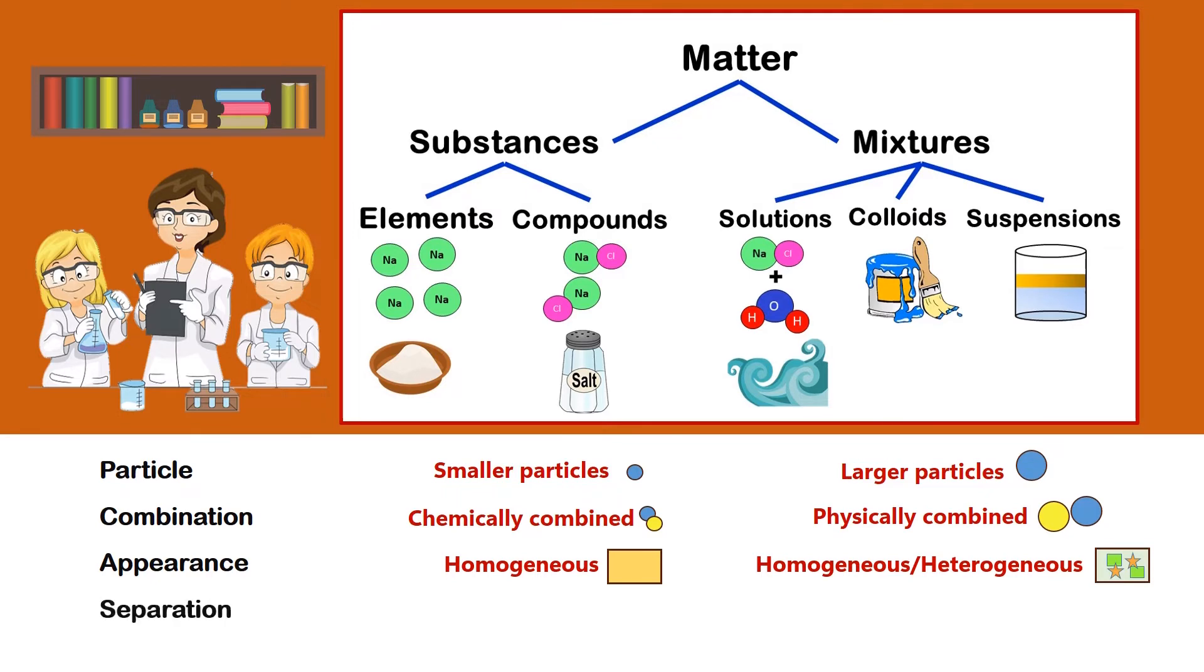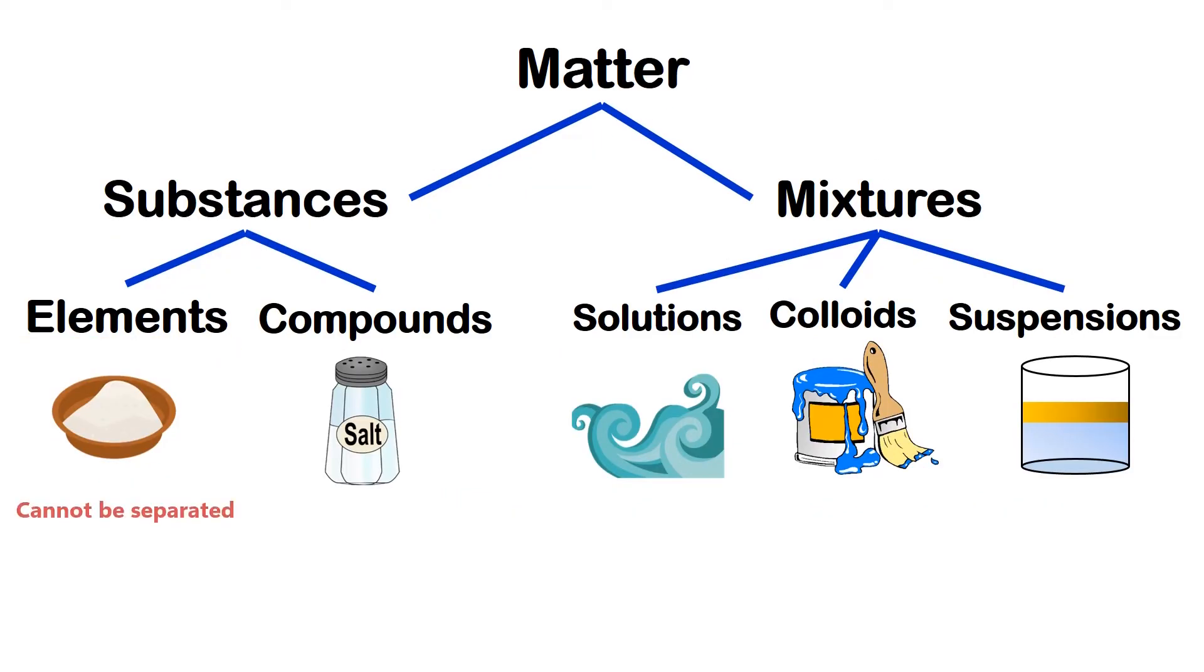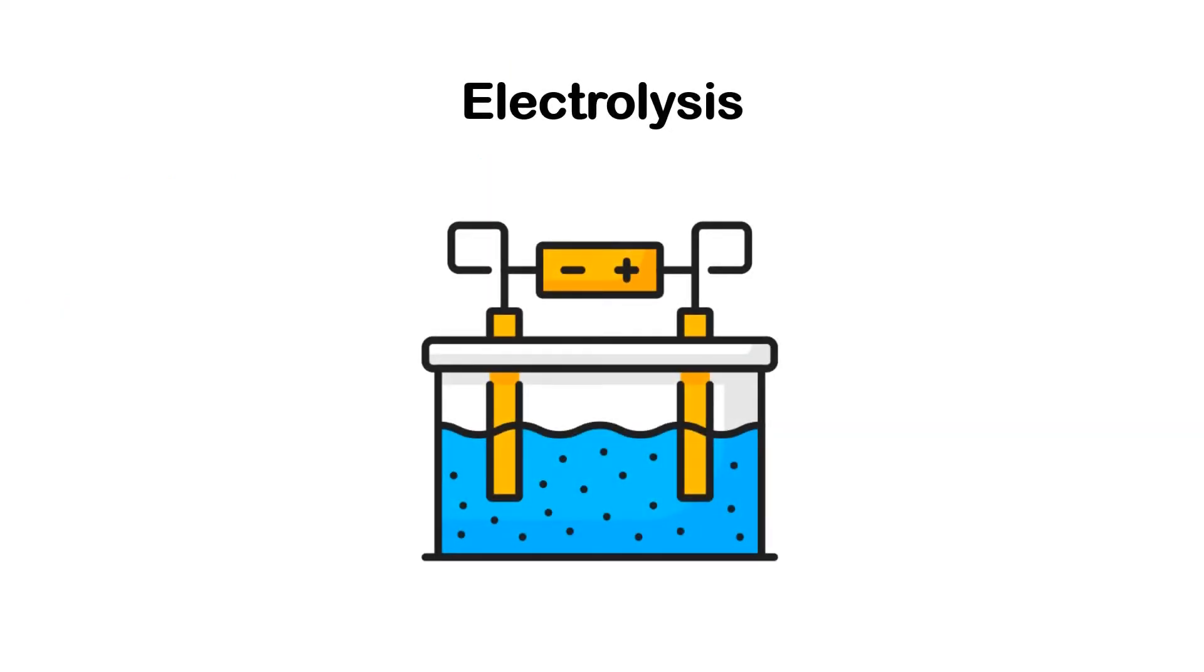In terms of separation technique, elements cannot be separated, because they only have one type of component. Compounds, on the other hand, can be chemically separated through electrolysis. Electrolysis is the process of separating hydrogen and oxygen in water by using electricity.